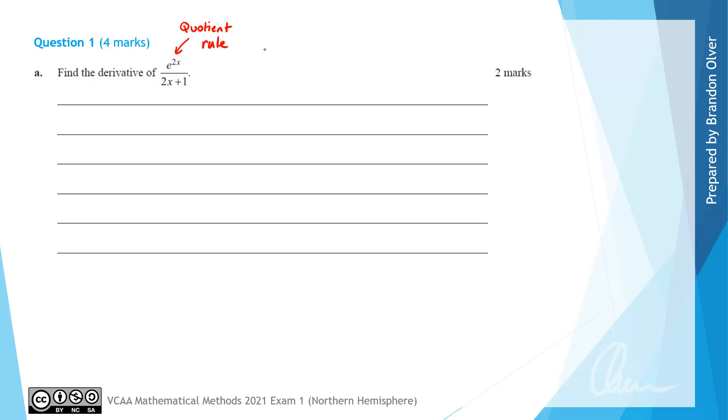So to set up the quotient rule, I'm going to let u be the function on the top of the fraction, which is u equals e^(2x). And v, therefore, will be the function on the bottom line of the fraction, which is 2x plus 1.